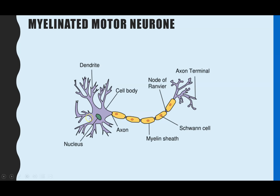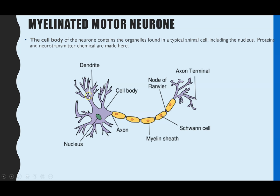The cell body, which we have here, is where all the organelles that you typically find in an animal cell are — for example, the nucleus, mitochondria, and ribosomes — so that proteins and neurotransmitter chemicals can be made. The dendrites, which you can see branching out of the cell body, are there to carry action potentials to surrounding cells.